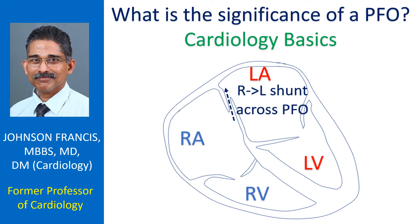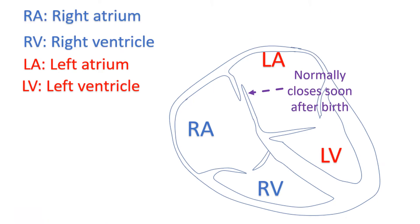PFO is a valve-like opening through the interatrial septum. When the pressure in the left atrium rises after birth as the lungs become functional and increase pulmonary venous return, it presses on the left side of the foramen ovale and closes it.